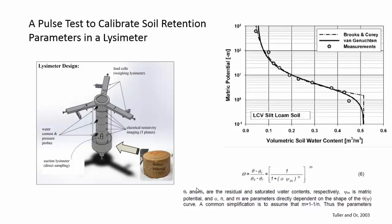The lysimeters we're going to use for the project are cylinders filled with soil. There will be sensors in the side of them, and we'll have load cells on the top of the lysimeter to suspend it and weigh it. These lysimeters will be put out and exposed to rainfall. The rain will fall on the exposed surface and infiltrate, and what we're interested in knowing is how the water is moving through this lysimeter.